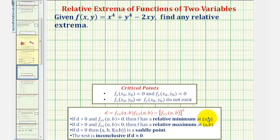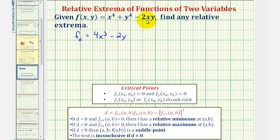Let's begin by determining the first and second-order partial derivatives. For the first partial with respect to x, we differentiate with respect to x treating y as a constant, giving us 4x³ - 2y. Then the partial of f with respect to y — differentiating with respect to y treating x as a constant — gives us 4y³ - 2x.